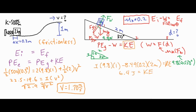We set up mgh for gravitational potential energy. Work equals friction force: mu times normal force — mu is 0.2, normal force is 8.49 N (from 9.8 times cosine 30) — multiplied by the 2-meter diagonal distance down the ramp. Subtracting the work from the gravitational PE gives 6.4 joules of kinetic energy at the bottom of the ramp.